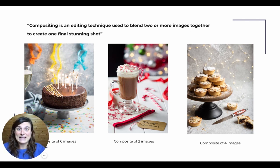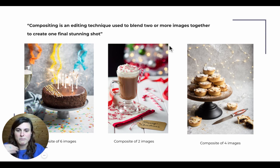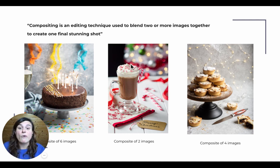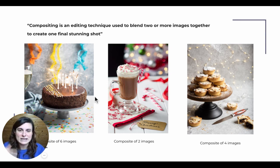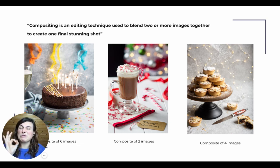Then I put them all together and that's the final result. The hot chocolate here is a composite of two images: one for the whole background, glass, chocolate, props, and everything. And another image I used for the cream because the cream died on me. It took me a while to set up the light and all of that, so I only took the cream out of another image where it looked its best.